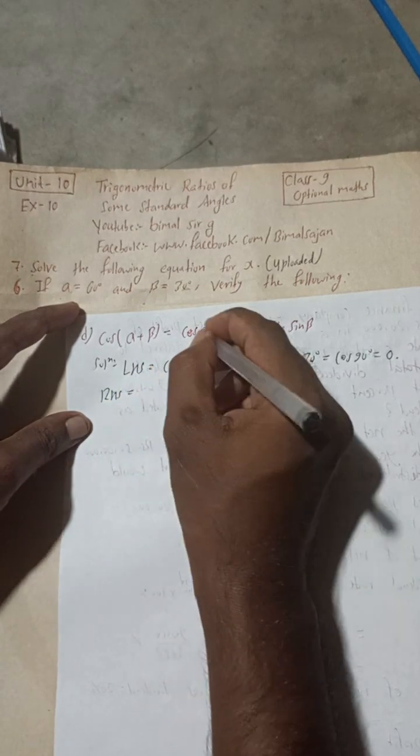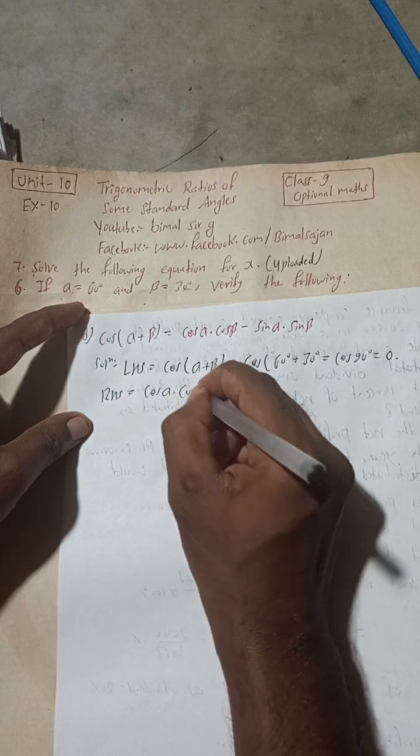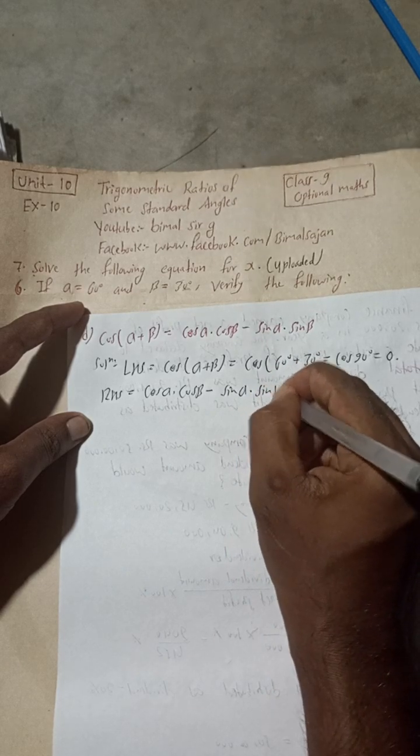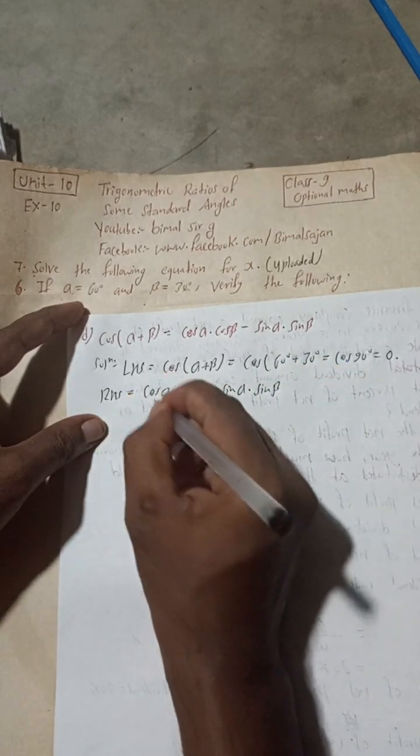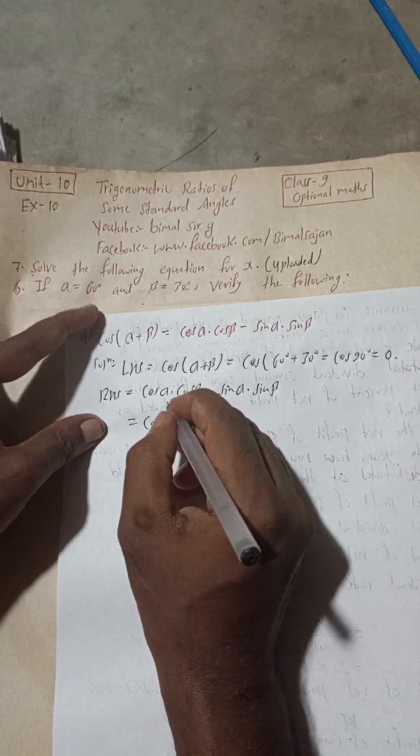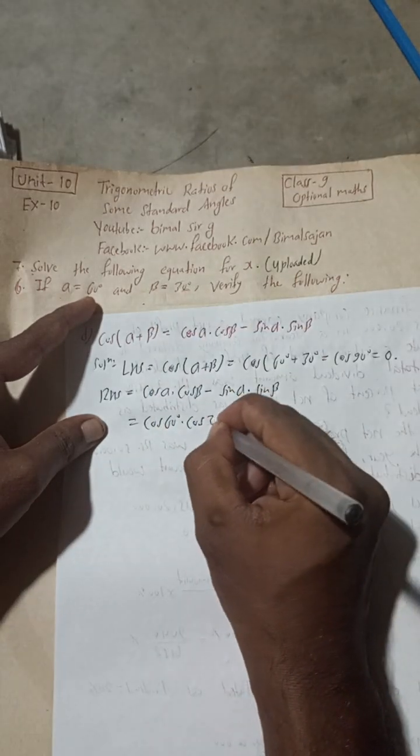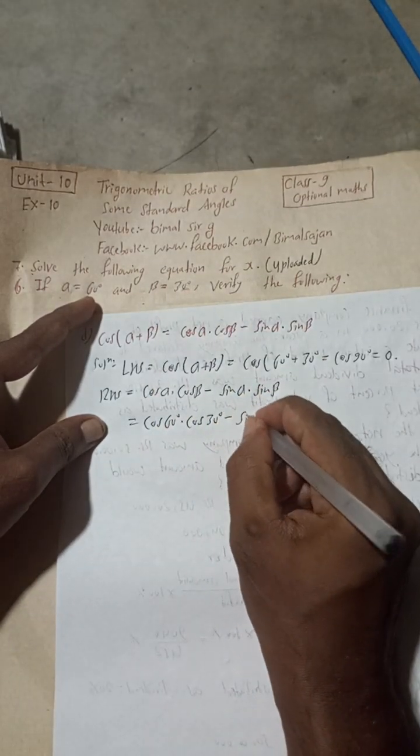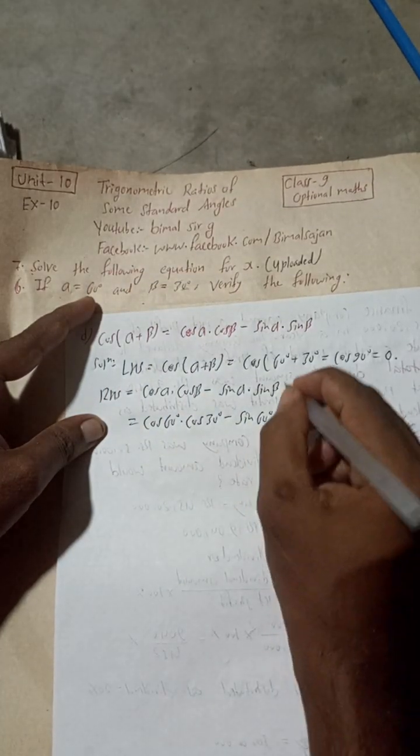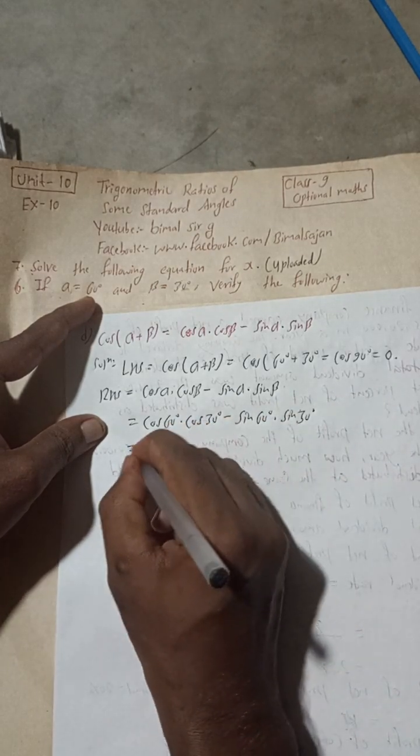Now I will take the RHS part. RHS is cos(alpha)cos(beta) minus sin(alpha)sin(beta). So cos(alpha) is 60 degrees, cos(beta) is 30 degrees, minus sin(alpha) which is 60 degrees, times sin(beta) which is 30 degrees.